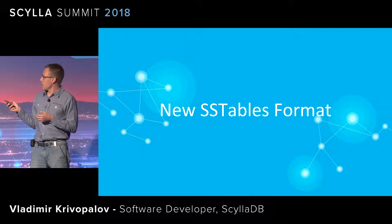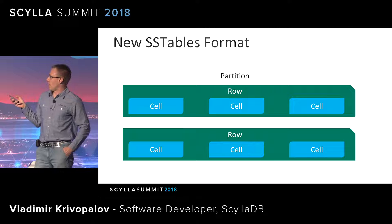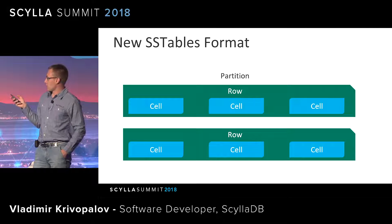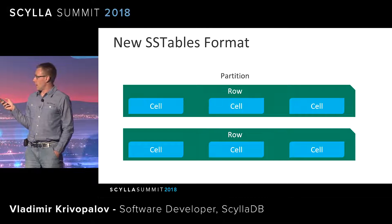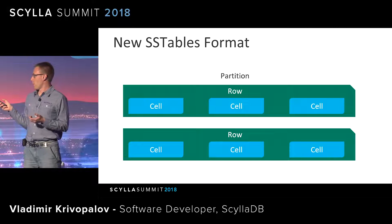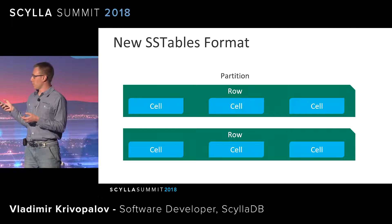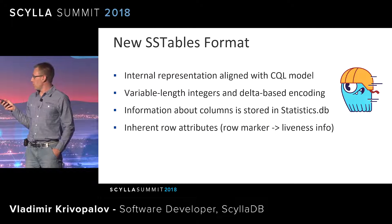Now, what does the new SSTable format bring us, and why is it better? In a nutshell, the new SSTable format introduces the notion of rows. Each partition now consists of rows, and each row contains cells. This is aligned with how we represent data in CQL. It is much easier to reason about, and naturally easier to read data — if you want to read a particular row from a partition, you just find it, read it, and you're done. The internal representation is now aligned with the CQL model, avoiding extra handling.